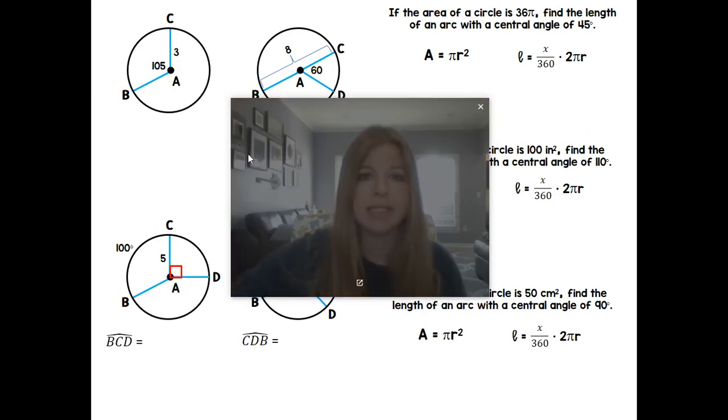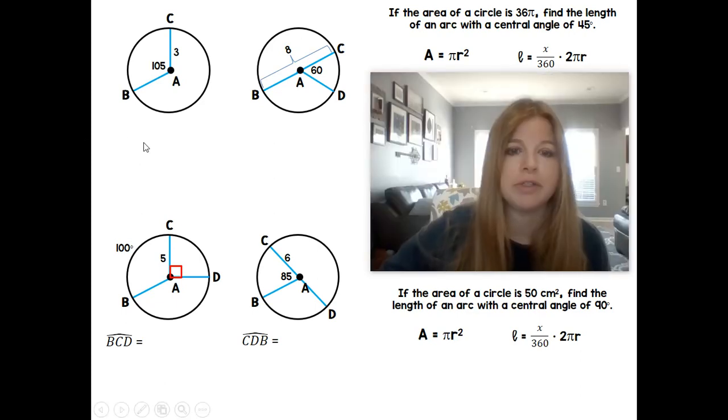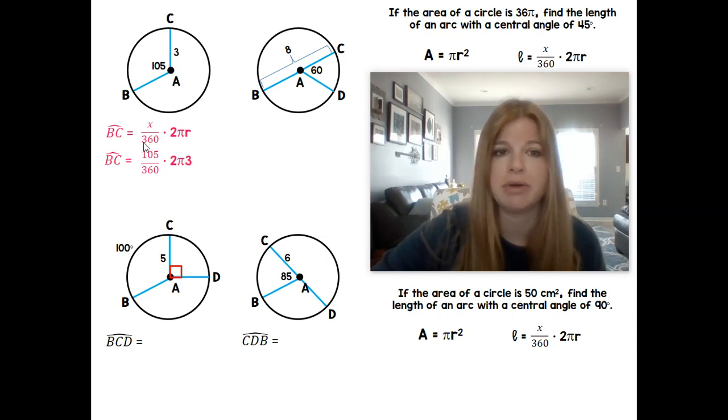Okay, let's take a look. Over here on the left, it's going to be those problems with just calculating a specific arc that I'm going to tell you. So our first one here would be if I wanted to calculate the arc length of BC, I would do x over 360 times 2πr.